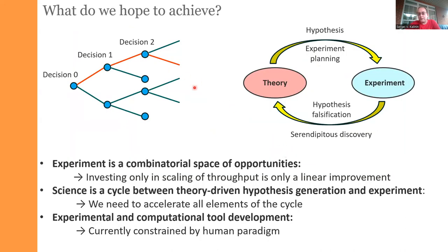The question becomes: can we make these workflows more efficient? If we want to use machine learning as part of the process, the first question we need to ask is what do we hope to achieve? Once we do anything in the lab — or in life — this is always a branching tree of possible decisions. At each point you can go left or right, arriving at the next decision. The experiment is always a combinatorial space of opportunities.